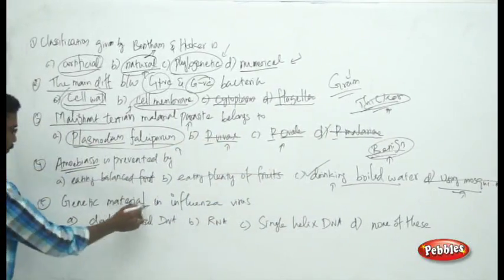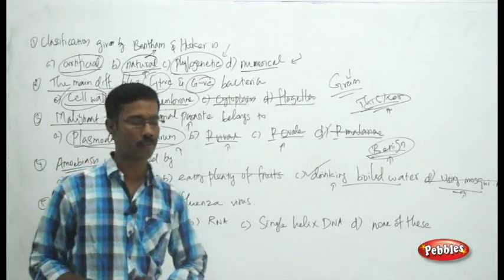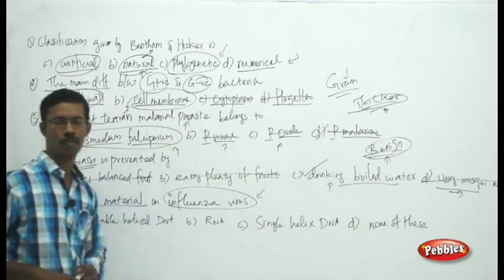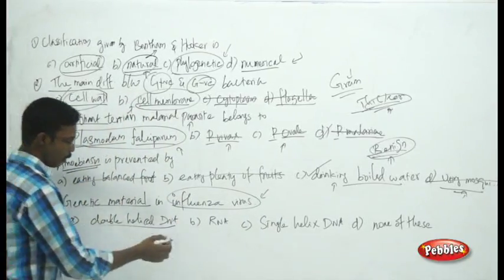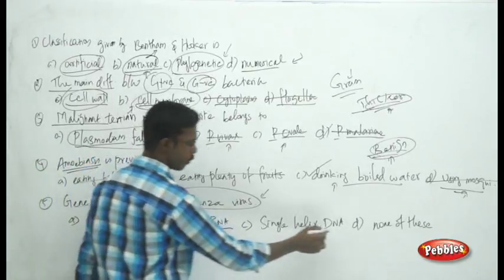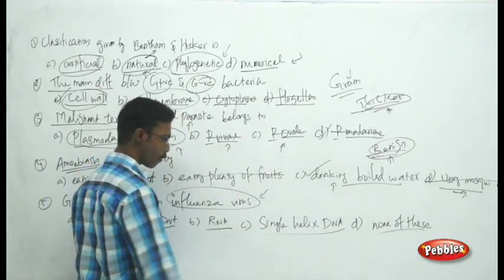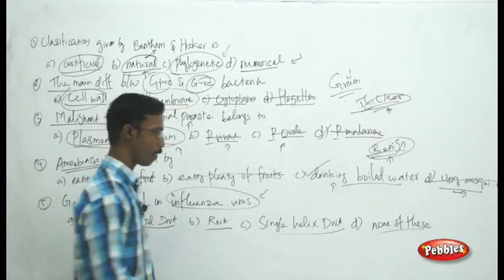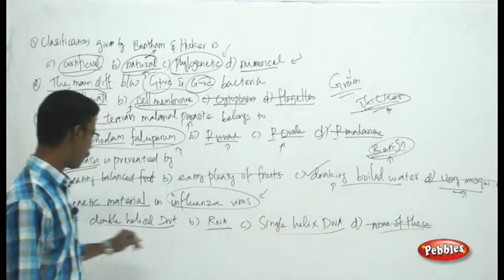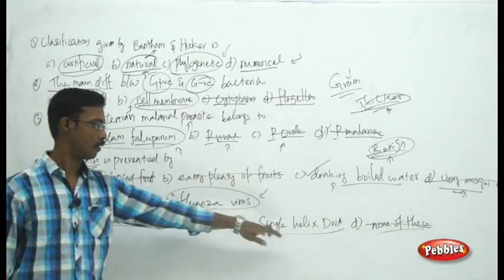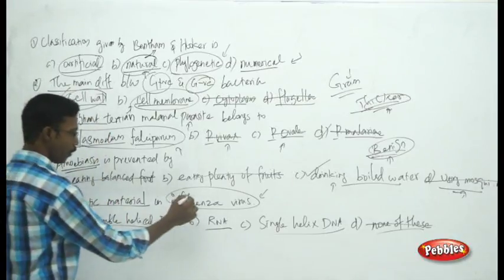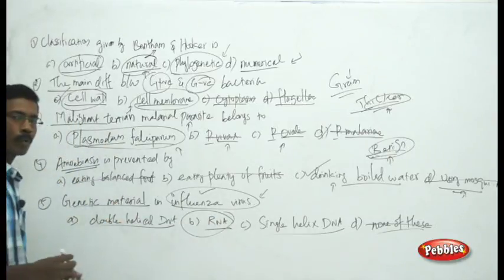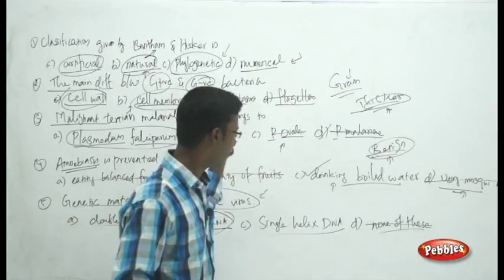The next question asks about the genetic material of the influenza virus. The choices are DNA, double-helical DNA, RNA, single-helix DNA, and none of these. There must be some genetic material, so we eliminate 'none of these.' Influenza is an RNA-bearing virus, so the answer is RNA.